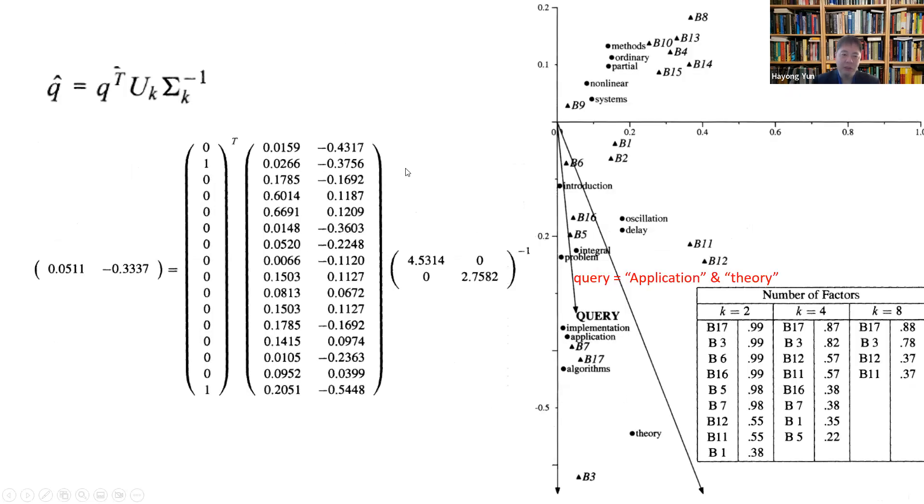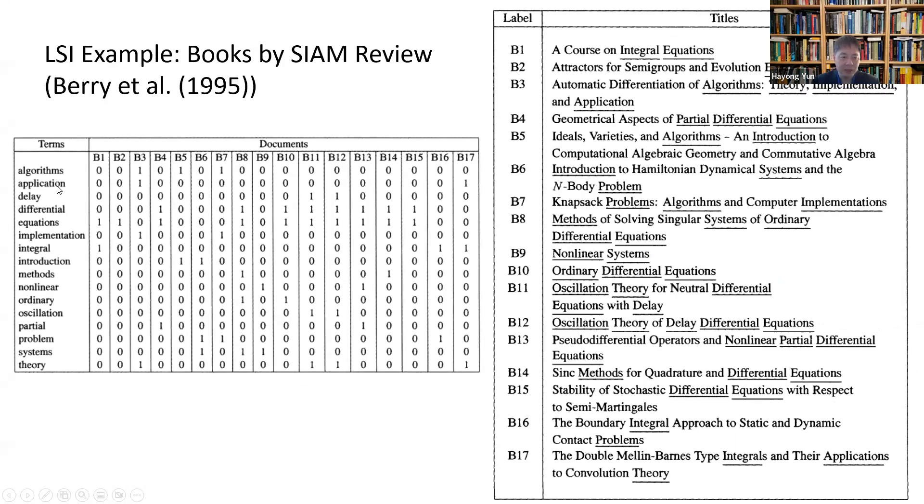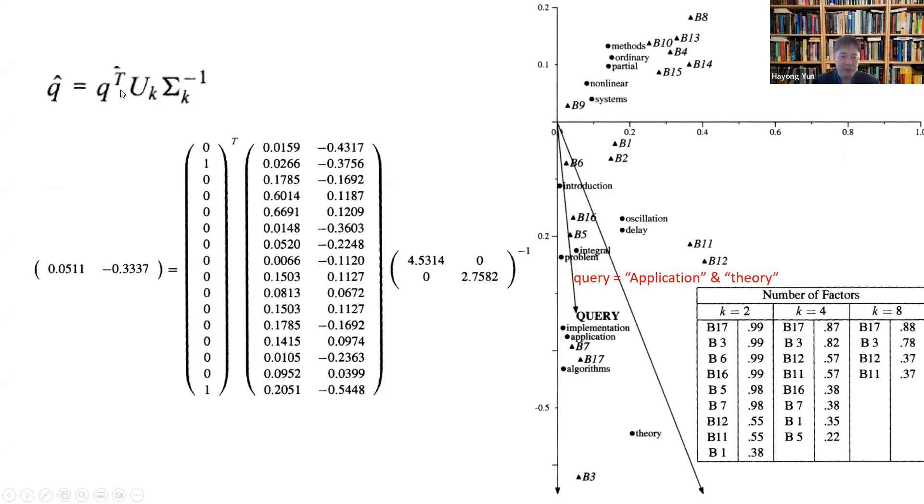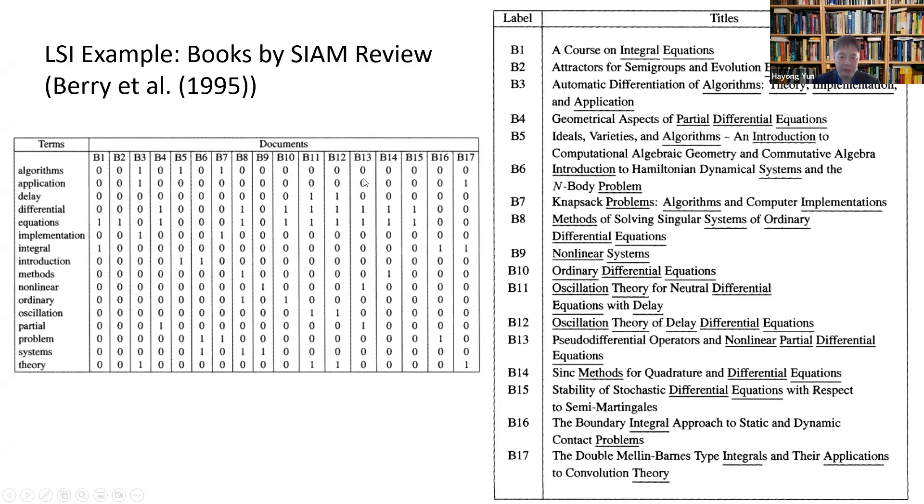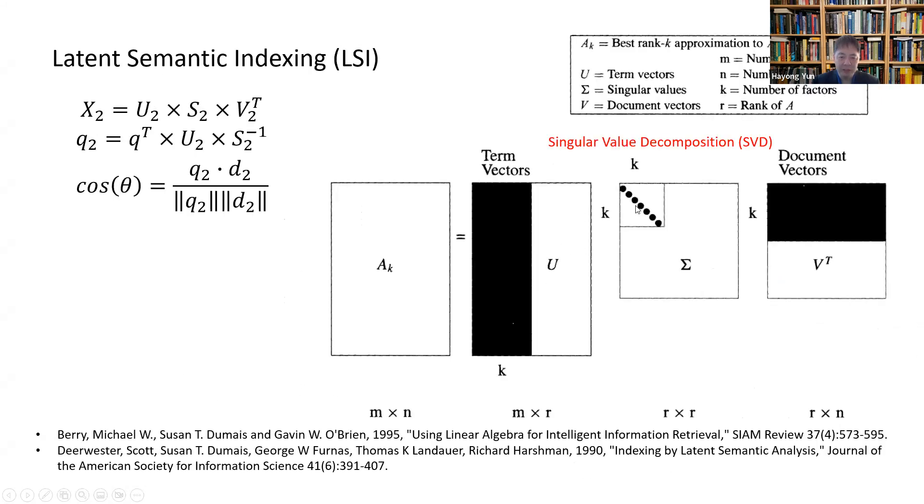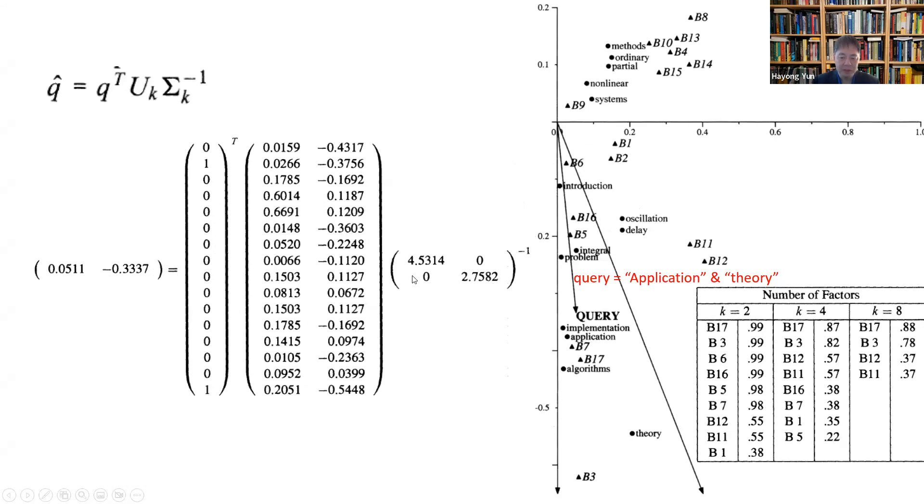What we do is perform singular value decomposition with k dimension of two, then have the query vector of 'application' and 'theory.' You'll see here, application and theory—it's one here. The U2 vector, remember this thing here, and the inverse of S, which is this here. So the two largest eigenvectors, multiply these two, and you get a query vector. Here are all the directions of these vectors, and the query vector is here.